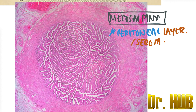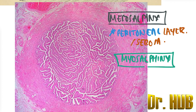The next layer is the muscularis, also referred to as mesosalpinx in some contexts. It contains two sub-layers: the inner circular (IC) and the outer longitudinal (OL).